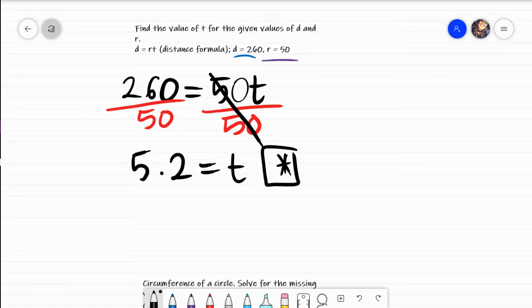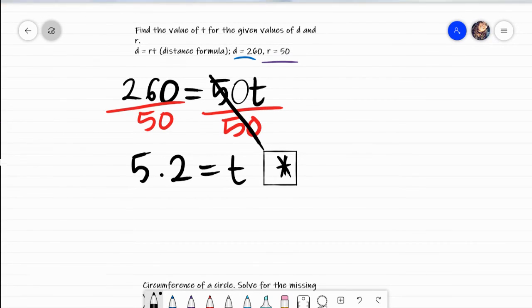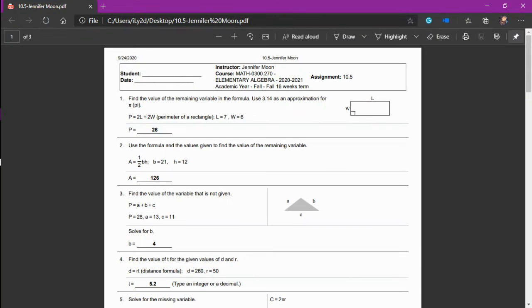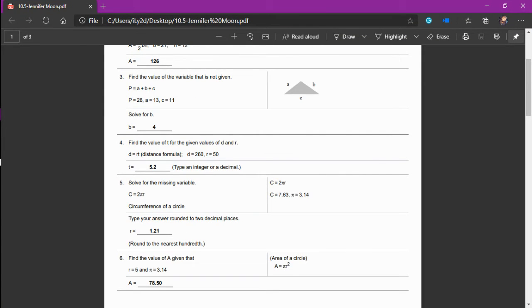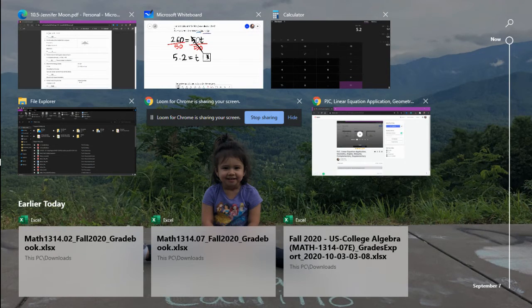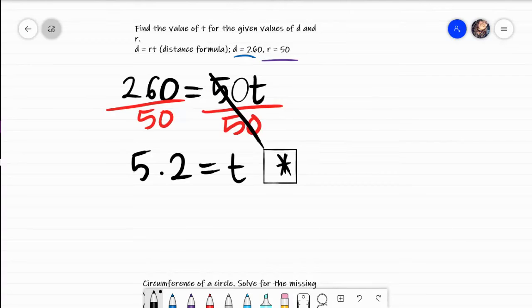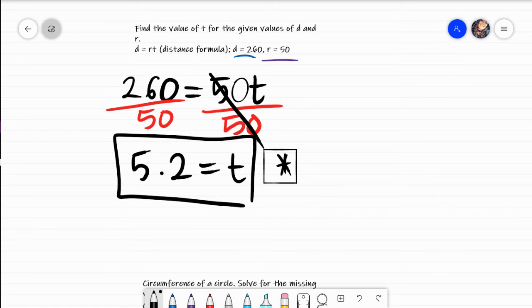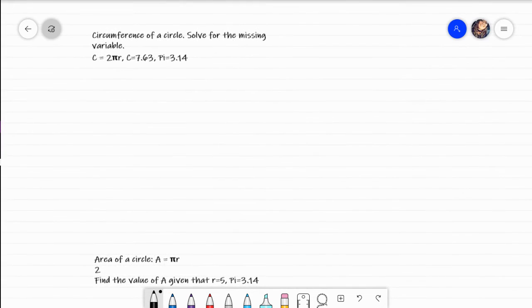There's a possibility that a problem like this would ask us to round. The good thing about me having the answers up, it actually does say that we could type an integer or a decimal. So 5.2 would be your final answer. This is just saying that the time it would take to drive that distance at our given rate would be 5.2 hours. Our distance was 260 miles, our rate, which is like how fast we're going, would be 50 miles per hour. And we would need to drive that for 5.2 hours to be able to drive that distance of 260.